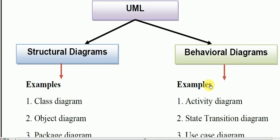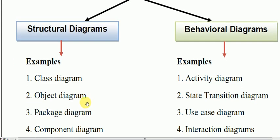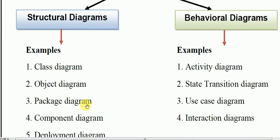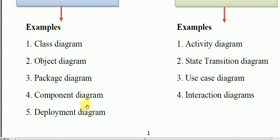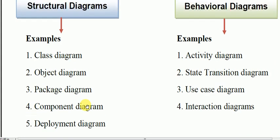The structural diagram category includes: class diagram, object diagram, package diagram, component diagram, and deployment diagram. These five kinds of diagrams are in the structural diagram. They represent the static model of the system.